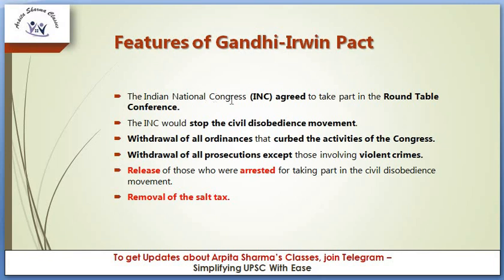Features of the Gandhi-Irwin Pact: The INC agreed to take part in the Round Table Conference and to stop the civil disobedience movement. The British government agreed to withdraw all prosecutions except those involving violent crimes, release those arrested for taking part in the civil disobedience movement, and remove the salt tax — one of the most important developments of this pact.